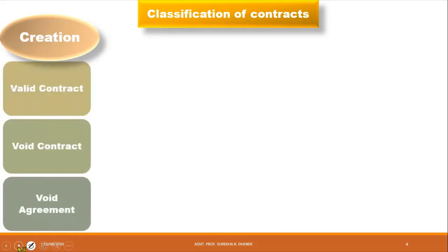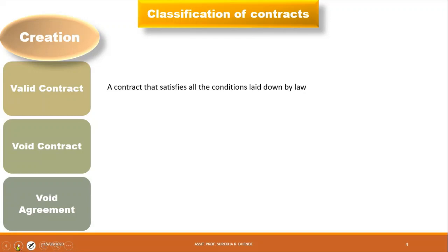Now the third classification is on the basis of enforceability, and there are six types. Valid contract: from the meaning itself it is understood — a contract that satisfies all the conditions laid down by law. Yesterday we covered the essentials — all those essentials which are applied in a contract make it a valid contract.